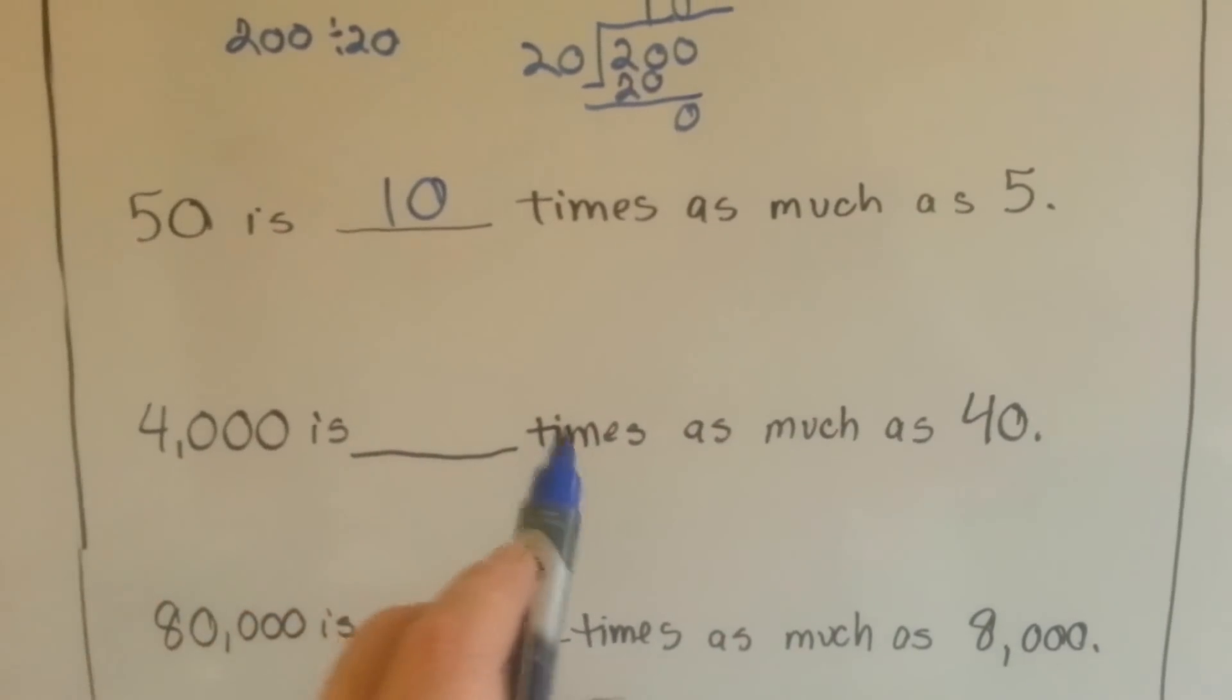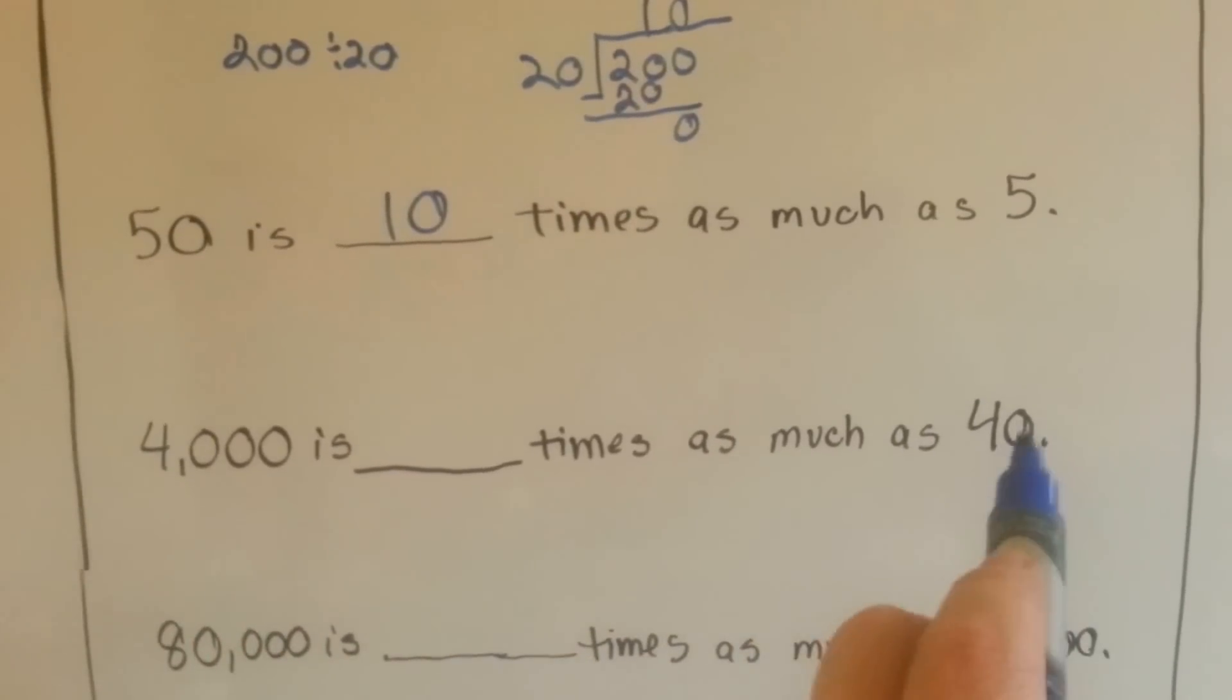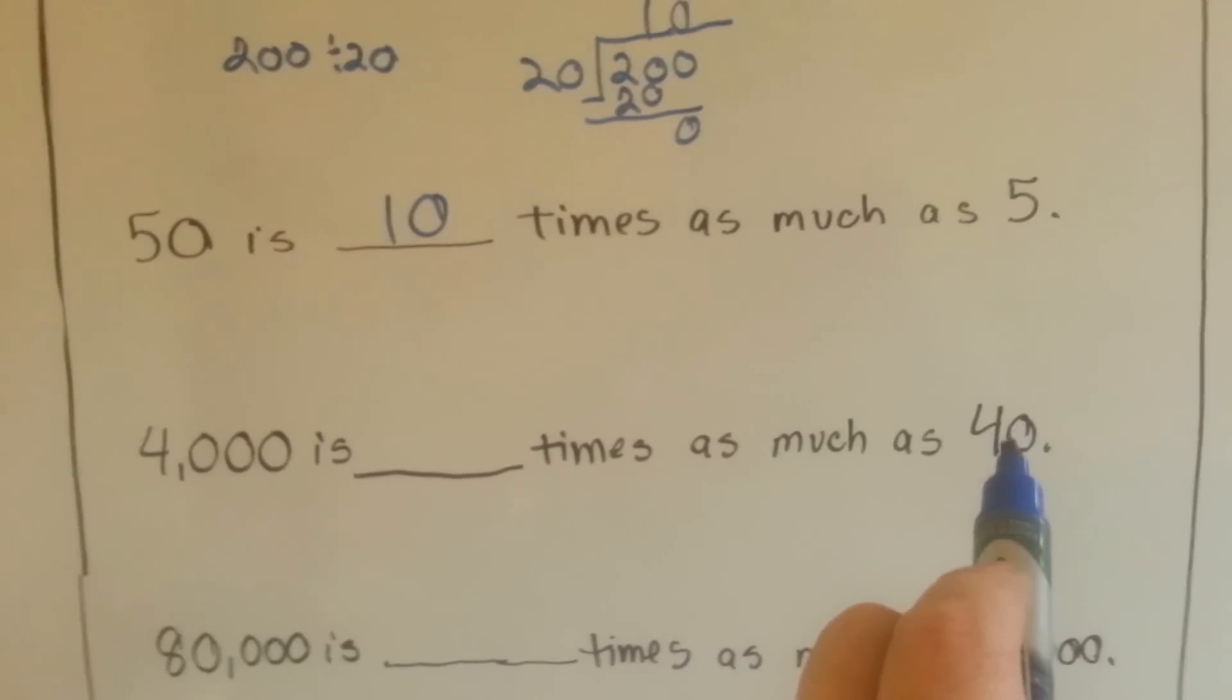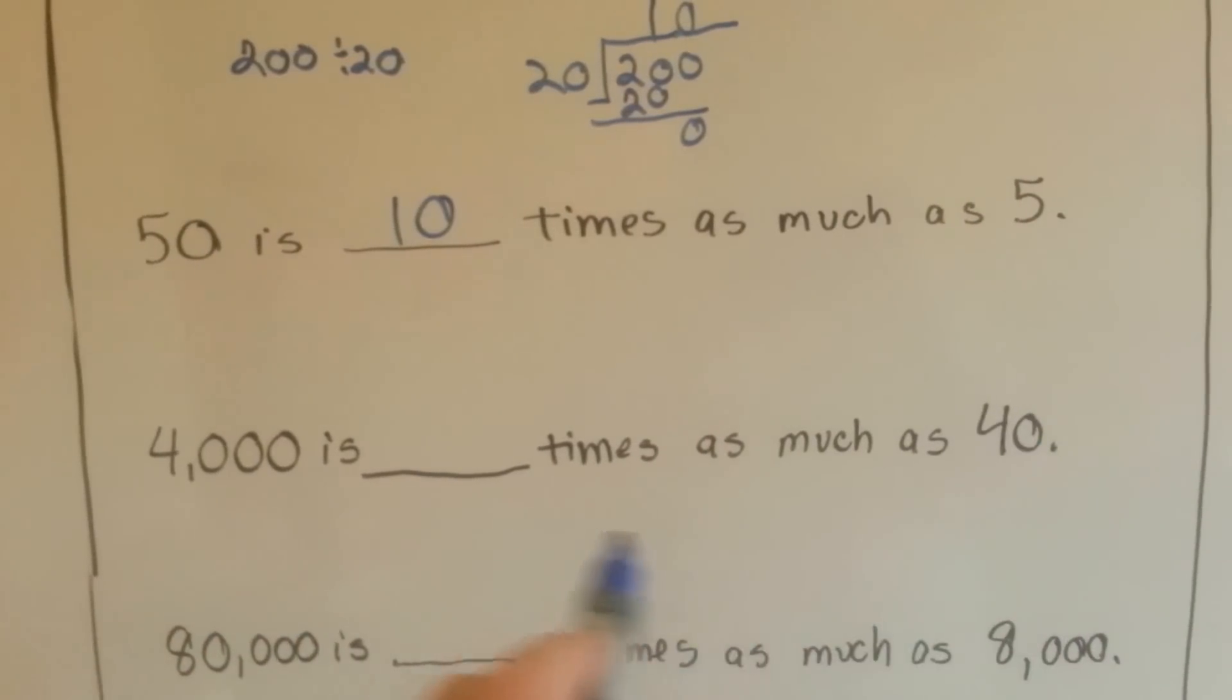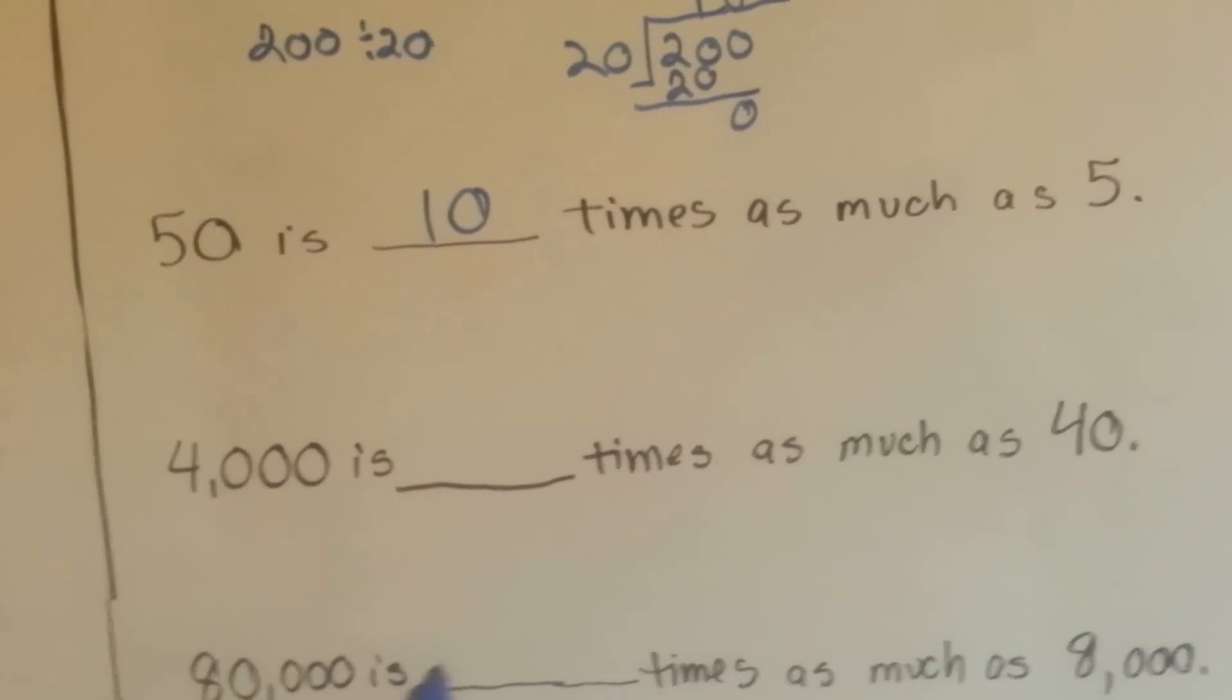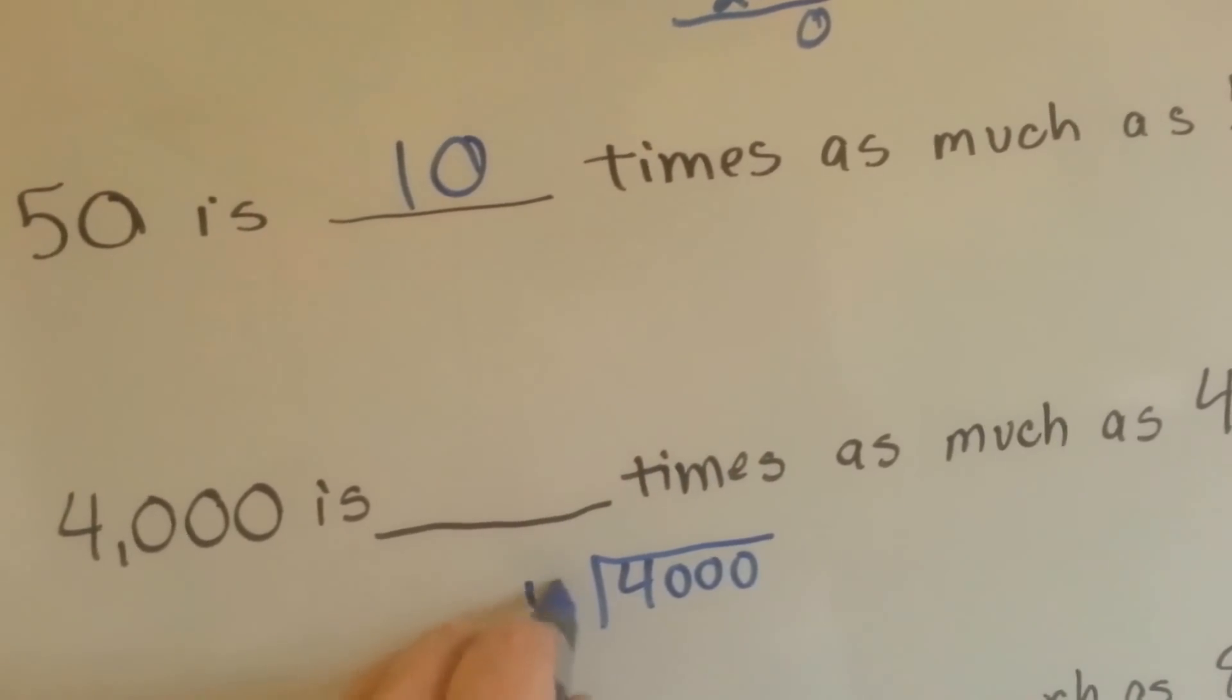How about here? 4,000 is blank times as much as 40. We can do 4,000 divided by 40, or we can say 40 times what is equal to 4,000. What would we need to multiply the 40 by to get to 4,000?